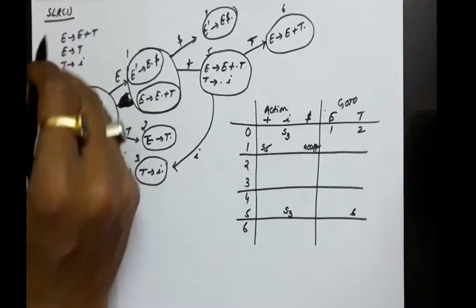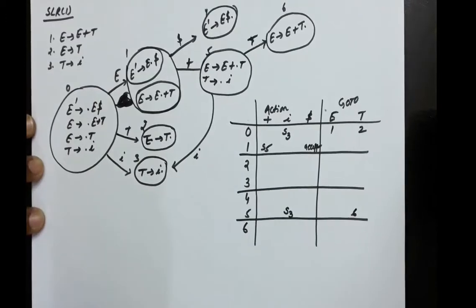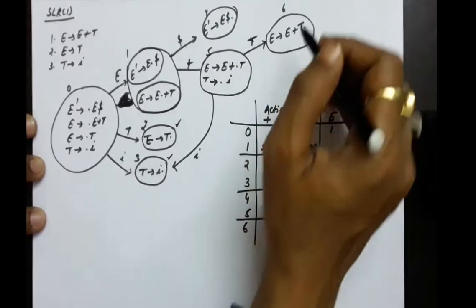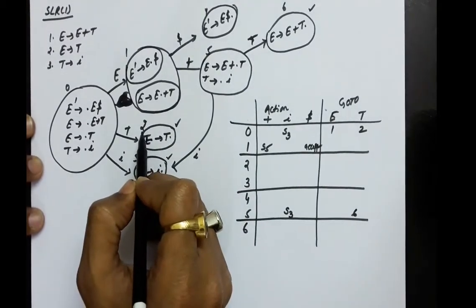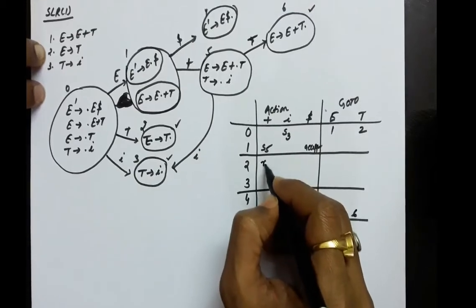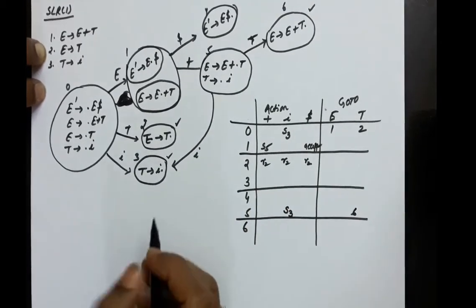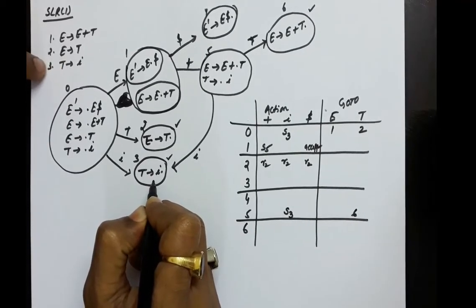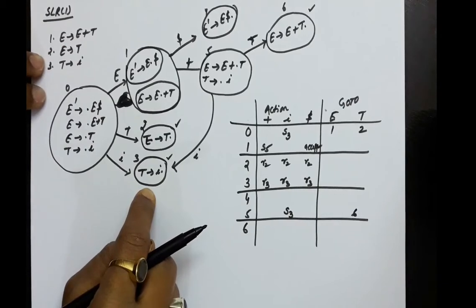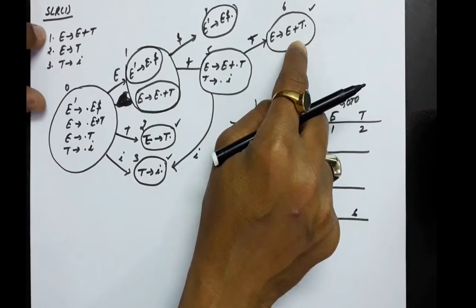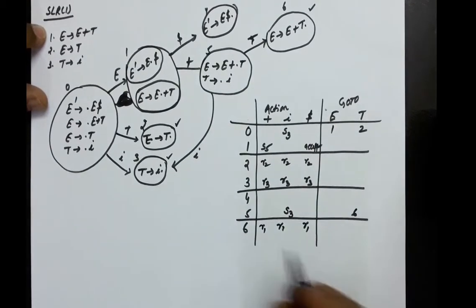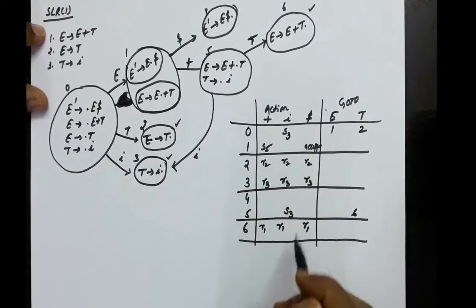Now let us write the reduction items. The production numbers are 1, 2, and 3. The final items appear in state 2, state 3, and state 6. In state 2 we have E → T., which is the second production, so we write R2. T → i. is the third production, so in state 3 we write R3. For state 6, E → E+T. is the first production, so we write R1. For LR0 we blindly write the reduction items in every cell of the terminal symbol columns.